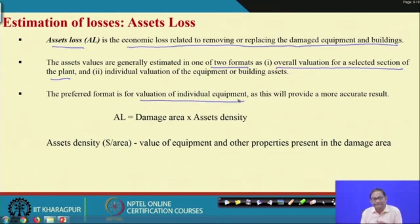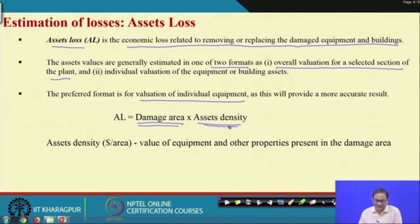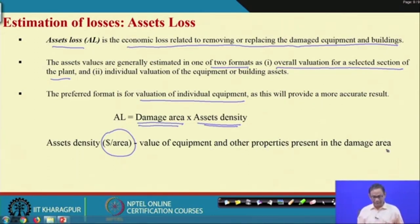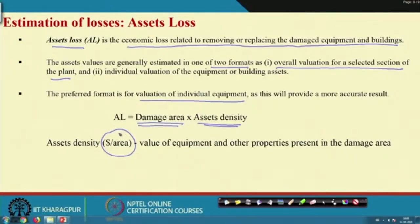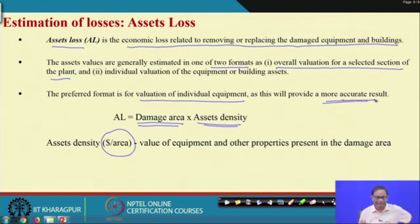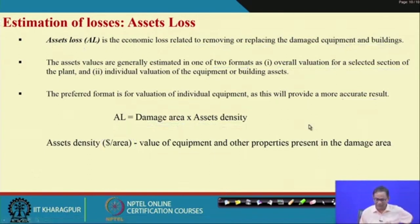If individual valuation is preferred — which is more correct — you need to find the damage area and also know the asset density. Asset density is the value of equipment and other properties present in the damage area in terms of dollar per area. If you know the asset density and the damage area, multiplying the two gives you the asset loss directly.